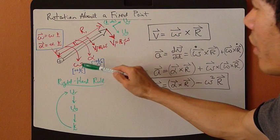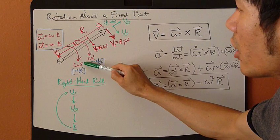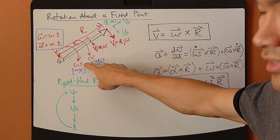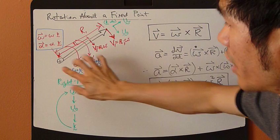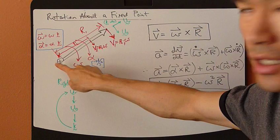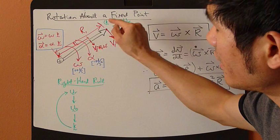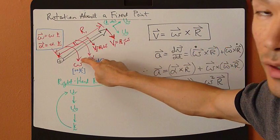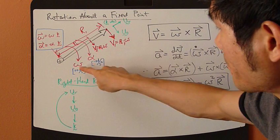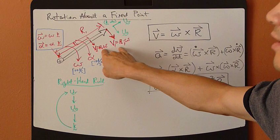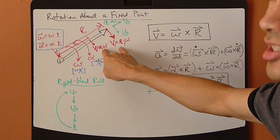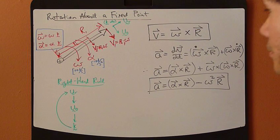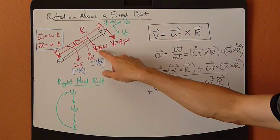Omega is angular velocity, alpha is angular acceleration, and both apply to the entire rigid body. So at any point along the rigid body, it always has the same angular velocity and acceleration. But for the linear velocity and acceleration, it's different for each point because it's a function of radius.